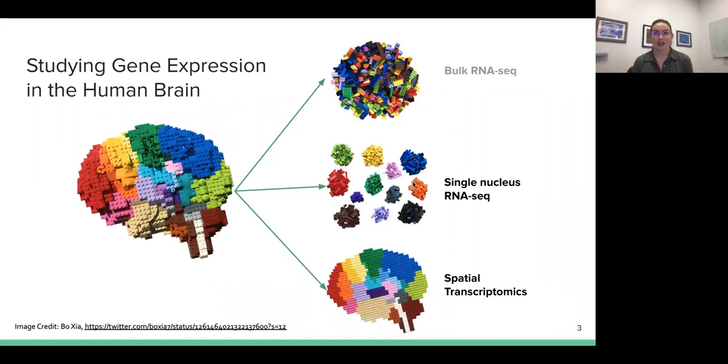One of the ways that we can understand the function of different cell types and structures in the brain is to study what genes they express. In the past years, there have been several rapidly evolving transcriptomic approaches for studying gene expression in the brain using RNA sequencing. This Lego brain schematic illustrates how we've expanded from bulk RNA sequencing, which contains a mixture of cell types, to single nucleus or single cell RNA-seq, which allows us to understand the transcriptional profile of one single cell nucleus or populations of different cell types. And then most recently is spatial transcriptomics, which aims to link gene expression to its anatomical location and add molecular insights into the structure function relationships.